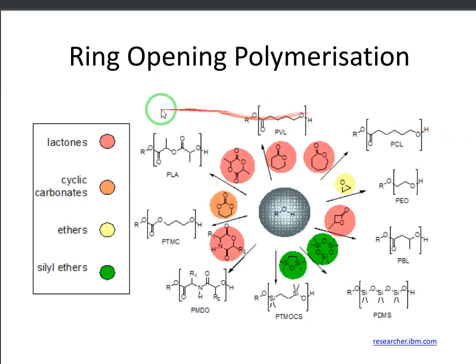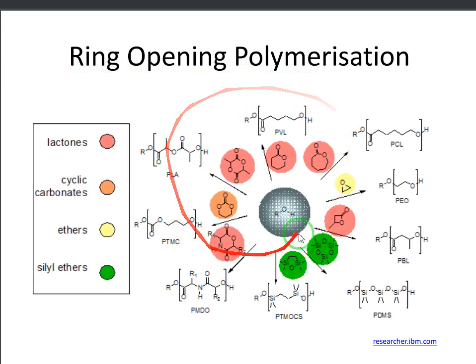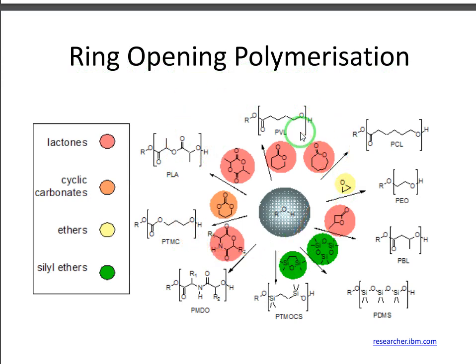Hi everybody and welcome to the last video about controlled polymerization. The last technique we are going to cover is ring opening polymerization, ROP. By covering this section we will cover about 70% of the slides of this topic, and after that we will continue with bioconjugation — the different methods to conjugate drugs and imaging modalities to our nanoparticles and backbones.